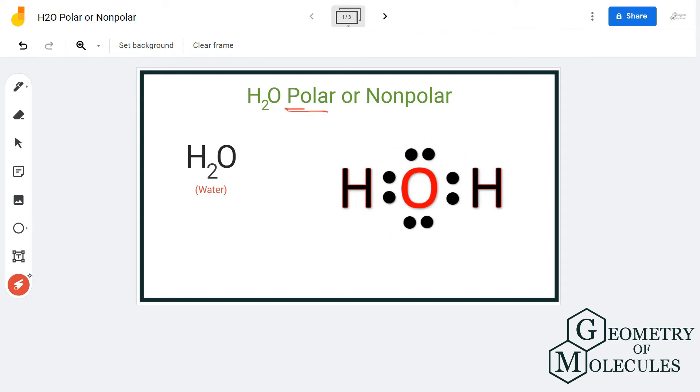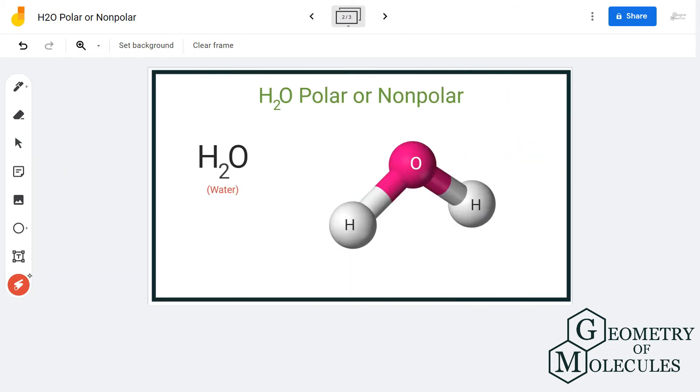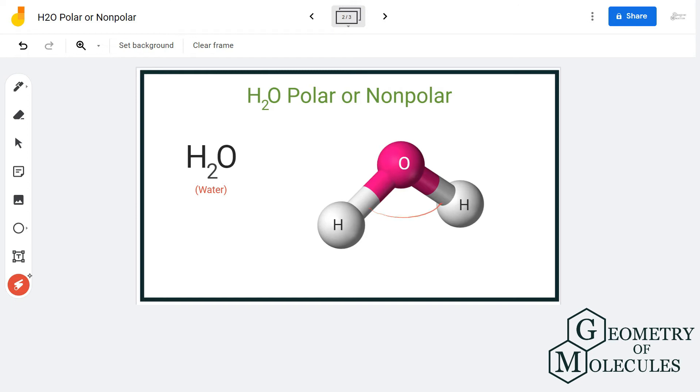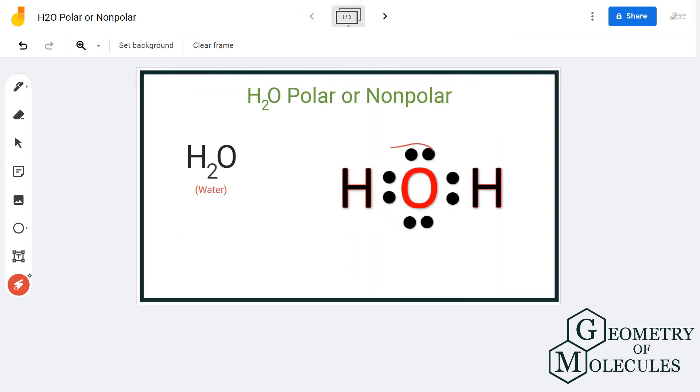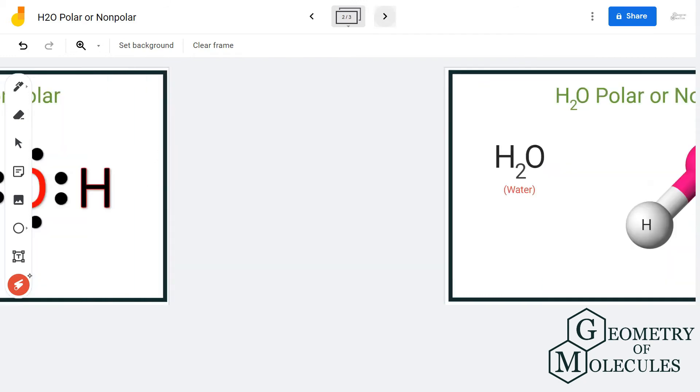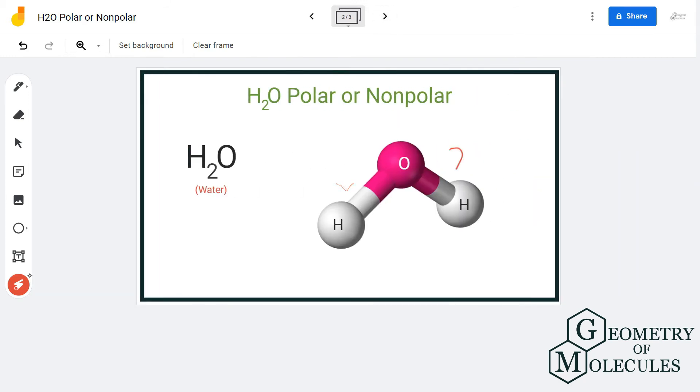To further confirm it, we will look at its shape. So if you look at its shape, the shape here is bent because of these two lone pairs of electrons that are present on the oxygen atom. Due to these, hydrogen atoms are pushed down and the shape acquired by H2O molecule is kind of bent or angular.